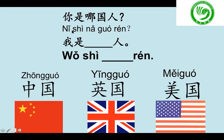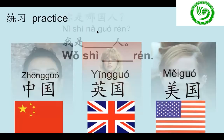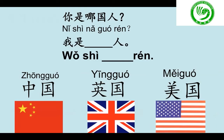One more time, follow me: 你是哪国人? 你是哪国人? 'Where are you from?' Now I'm gonna ask you, you answer me please. 你是哪国人? Second picture: 你是哪国人? Third one: 你是哪国人? Now you ask me please, from the first picture: 你是哪国人? 我是中国人. Second picture: 我是英国人. Third one: 我是美国人.